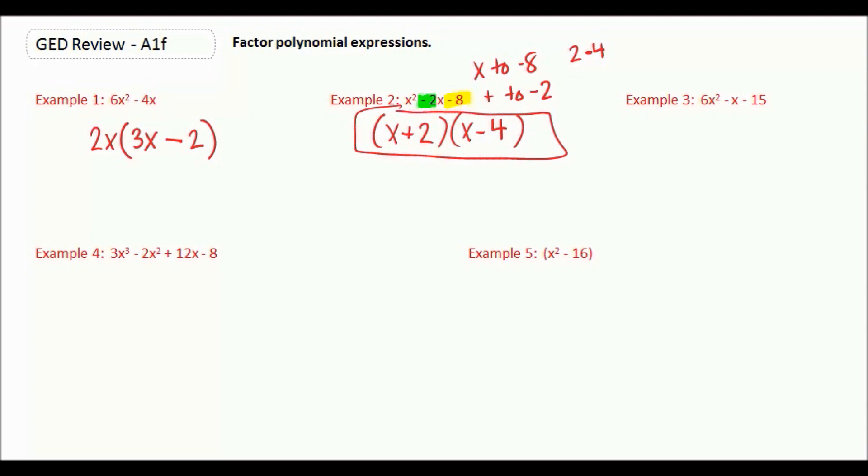The good thing about factoring is you could always go back and check to see if you did it correctly. If we now FOIL this, we should get back our original question. So x times x is x squared. x times negative 4 is negative 4x. 2 times x is 2x. And 2 times negative 4 is negative 8. So we get x squared minus 2x minus 8.